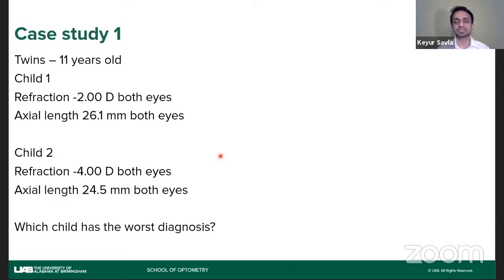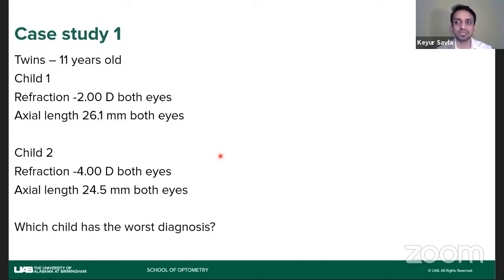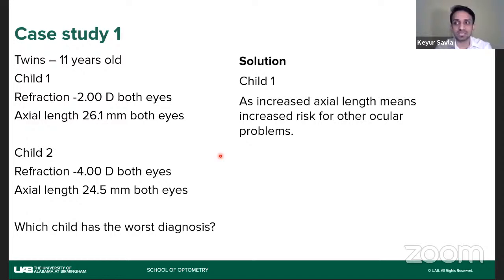Let me quickly go through two case studies. Case one: twins who are 11 years old. Child one has two diopters of myopia with an axial length of 26.1 mm in both eyes. Child two has four diopters of myopia but an axial length of 24.5 mm in both eyes. The question is: which child has the worst diagnosis? Always look at the axial length — that is the primary factor, even though they are the same age. Child one has the worst diagnosis and you want to worry more about child one than child two, because they have much more risk of having other issues later on in life. Increased axial length means increased risk for other ocular problems.